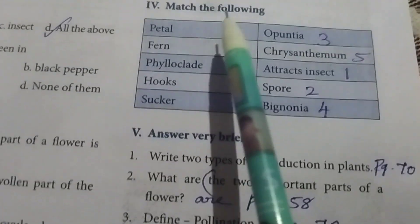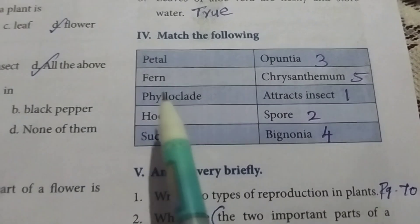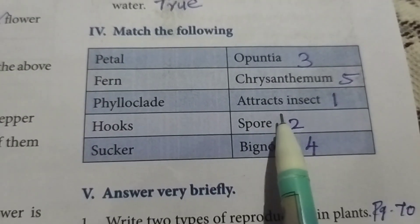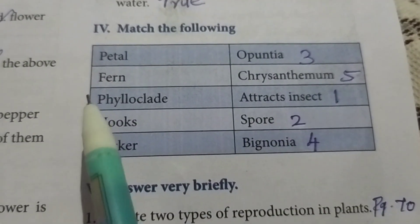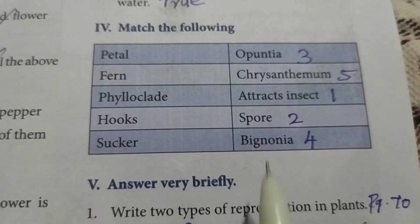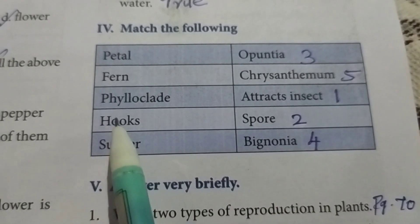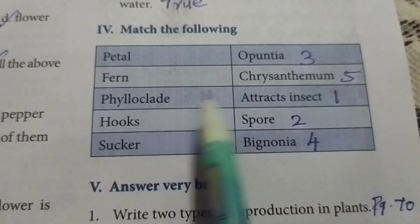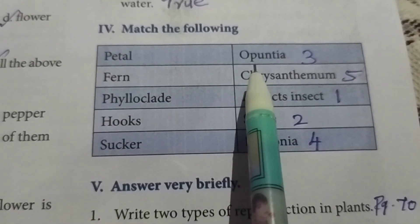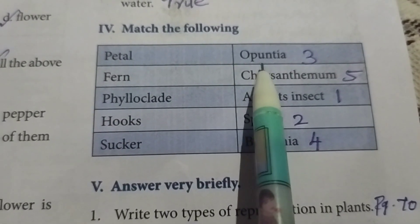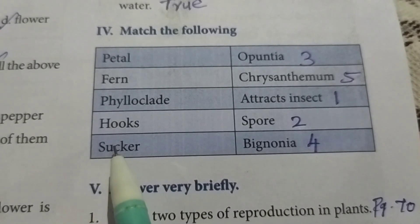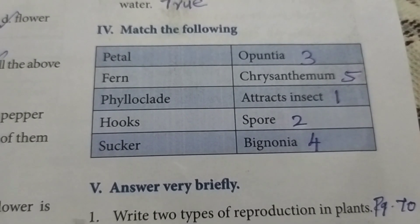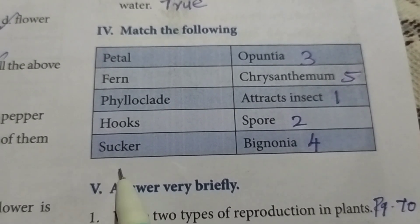Fourth Roman numeral: Match the following. Petal — Attracts insects. Fern — Spore. Phylloclade — Opuntia. Then hooks — Bignonia.